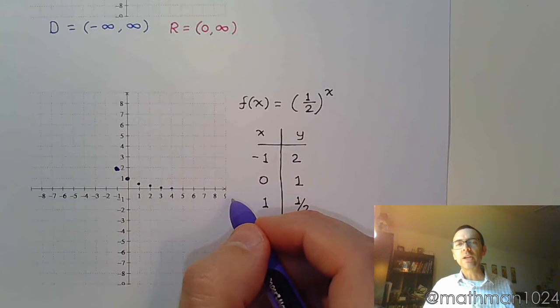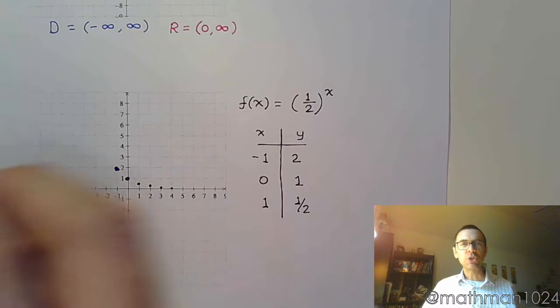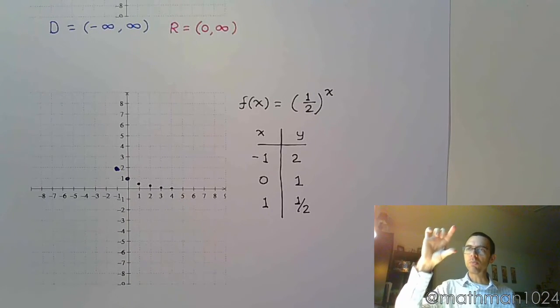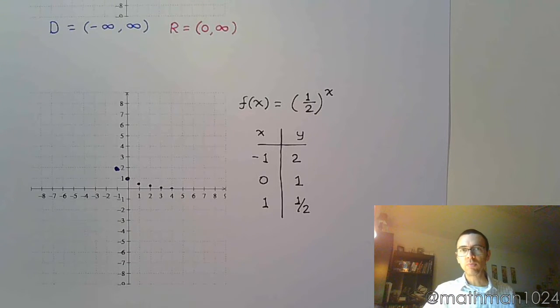And that's what you're going to see with any exponential that has a base that's between 0 and 1. You're multiplying times a number that's less than 1, so it's going to make it get smaller and smaller and smaller. As opposed to multiplying times something that's bigger than 1, which means you get to grow.